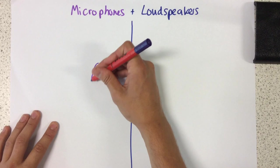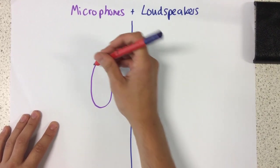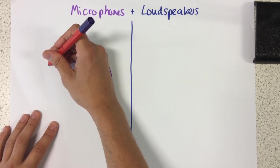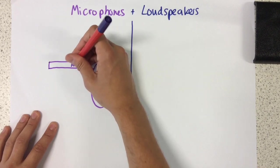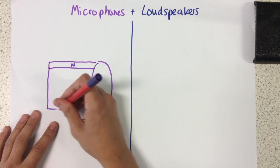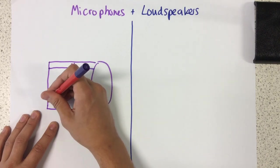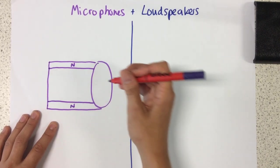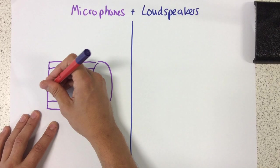First of all, a microphone has a structure that looks a little bit like this. Now, the whole purpose of our microphone is to turn pressure from, for example, someone's voice into an electrical current.